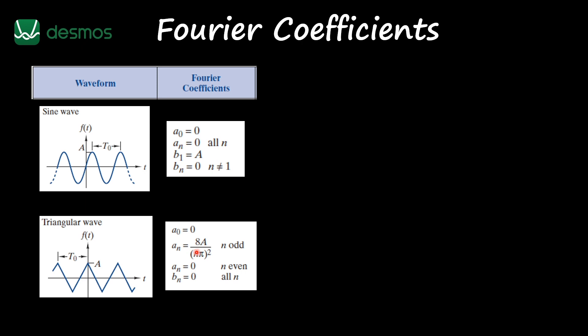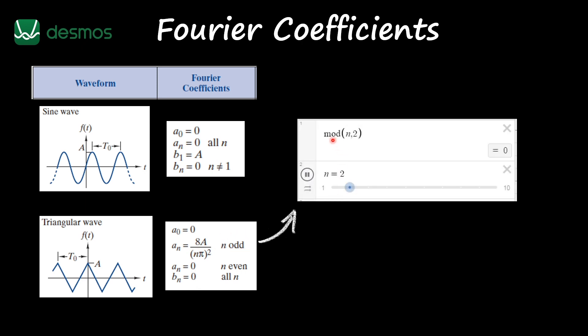And on Desmos, what I'm going to do to represent this odd is I'm going to use the mod of N of 2. So if N is odd, this is going to give you 1. If N is even, this is going to give you 0. All right, so let's see that on Desmos.